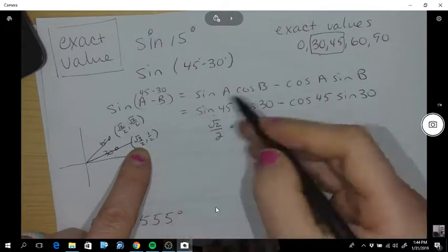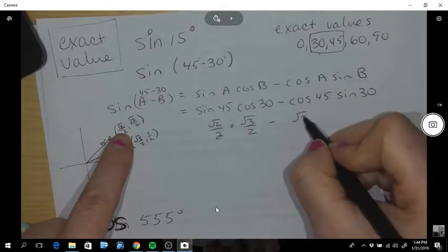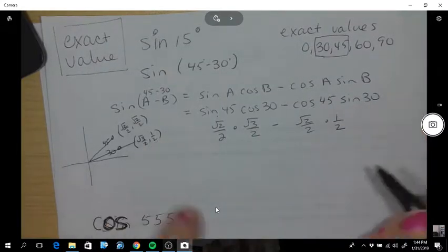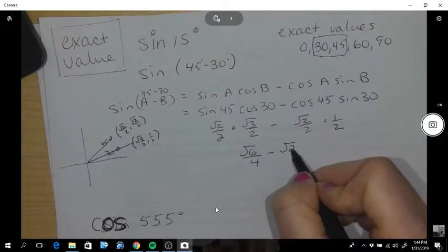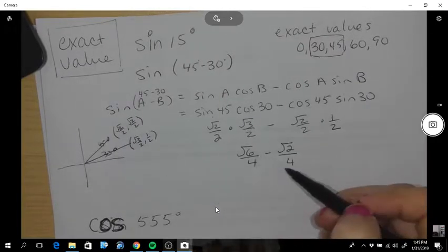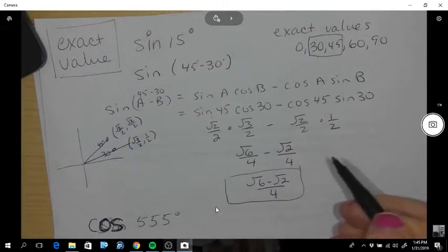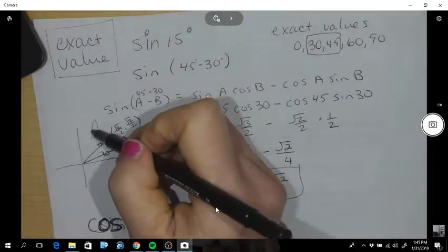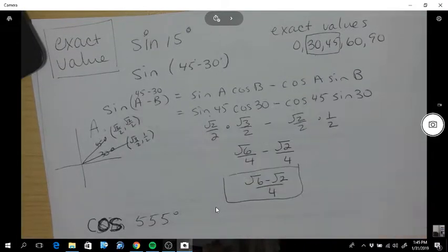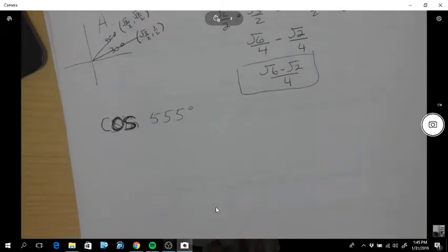So sine 45 is that y value times cos of 30 which is the x value, subtract cos of 45, that's the x value, times sine of 30, that's the y value. This is root 6 over 4 minus root 2 over 4, so the final answer is root 6 minus root 2 over 4. Let's check in ASTC quadrants. 15 degrees is in the A quadrant, that means our sine is positive, so we leave it. Check for your signs after you're done.